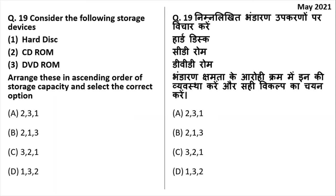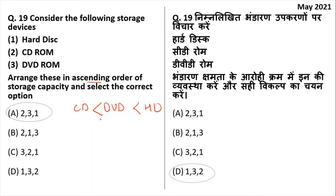Arrange the storage devices — hard disk, CD-ROM, DVD-ROM — in ascending order of storage capacity (smallest to largest). The least capacity is CD-ROM, then DVD, and the highest capacity is hard disk. The answer is 2, 3, 1 — meaning CD-ROM, DVD-ROM, hard disk.